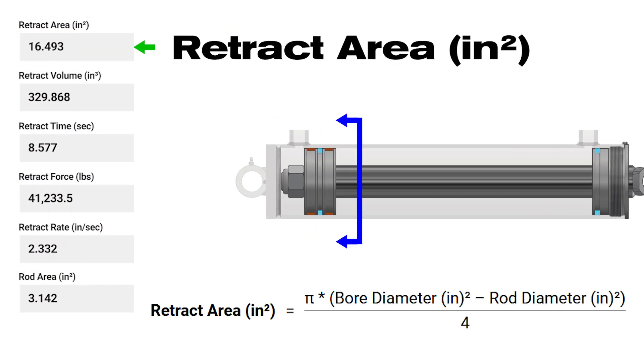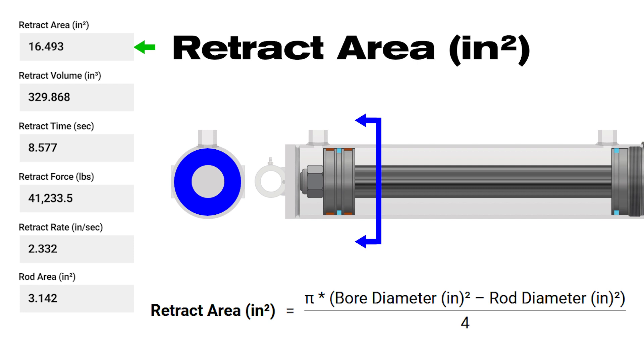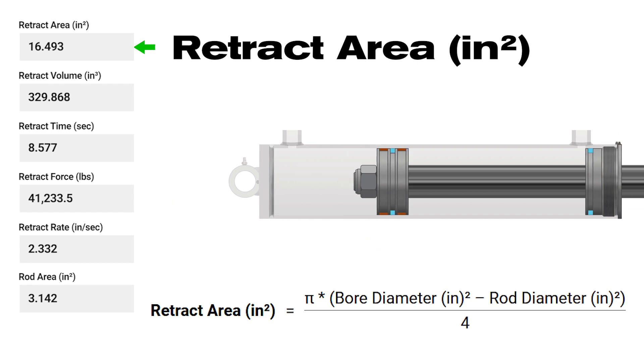Retract area, measured in square inches. Hydraulic cylinders have less area on the rod side as the area of the rod itself is subtracted from the cylinder bore area.